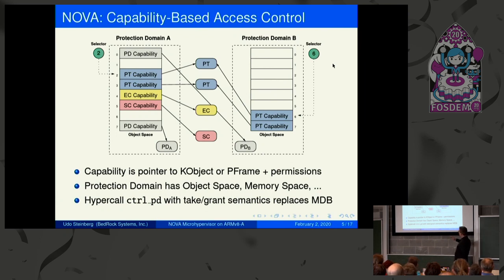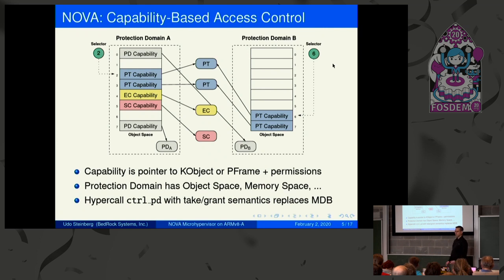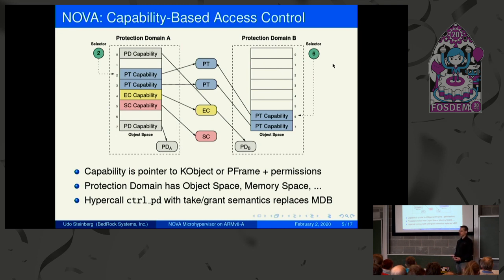Nova is based around capabilities. We have kernel objects — protection domains (address spaces), execution contexts (threads or virtual CPUs), and portals (communication endpoints). These kernel objects cannot be referenced directly. Instead, every protection domain that needs to access them is given a capability — a pointer to a kernel object plus associated permissions. Possession of a capability gives you the right to invoke it; without a capability, you cannot name or access the object.